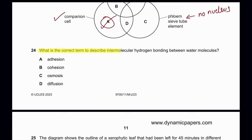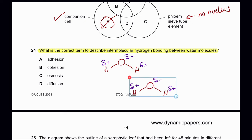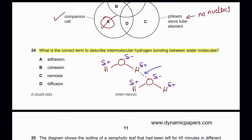Question 24: What is the correct term to describe intermolecular hydrogen bonding between water molecules? A water molecule has a partially negative oxygen and partially positive hydrogens. When another water molecule is nearby, the partially negative oxygen attracts the partially positive hydrogen, forming hydrogen bonding. This is a cohesive force between the molecules themselves. So B — cohesion — is the correct answer.